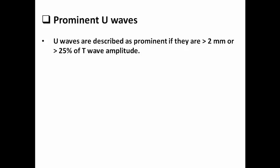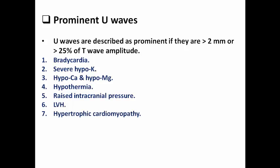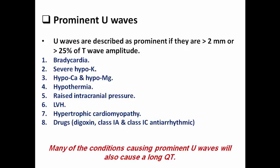U waves are described as prominent if they are more than two millimeters or more than a quarter of the T wave amplitude, as seen in conditions like hypokalemia, severe hypomagnesemia, hypocalcemia, hypothermia, raised intracranial pressure, LVH, hypertrophic cardiomyopathy, and drugs such as class IA and IC antiarrhythmics. Many of the conditions causing prominent U waves are the same conditions that cause long QT, which is why patients with long QT interval can also show prominent U waves.